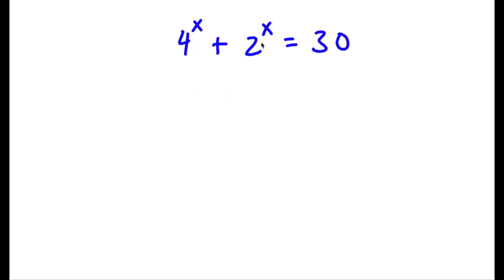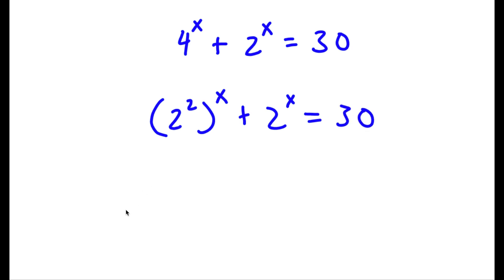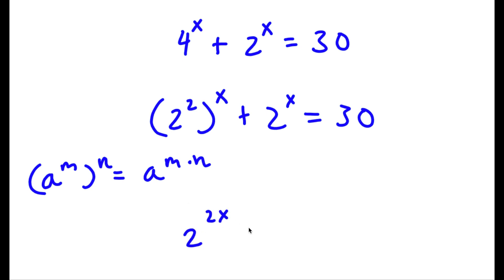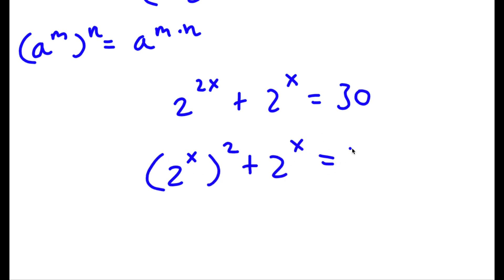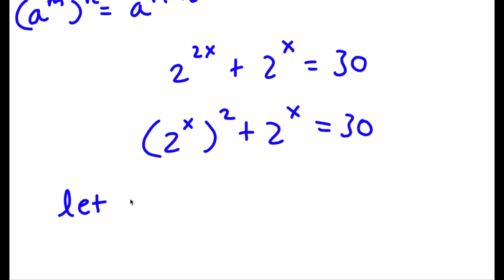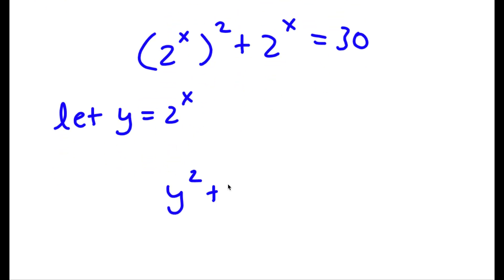Alright, so I have 4 to the power of x plus 2 to the power of x is equal to 30. Now 4 is the same thing as 2 squared. So now I have 2 squared to the power of x plus 2 to the power of x is equal to 30. Using the rule a to the power of m to the power of n equals a to the power of m times n, 2 to the power of 2 to the power of x goes to 2 to the power of 2x, plus 2 to the power of x equals 30. Now I'm going to rewrite 2 to the power of 2x as 2 to the power of x squared. I'm going to let the variable y equal 2 to the power of x. So now I have y squared plus y is equal to 30.